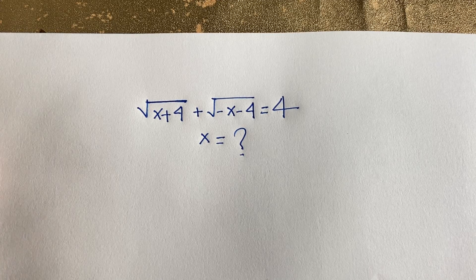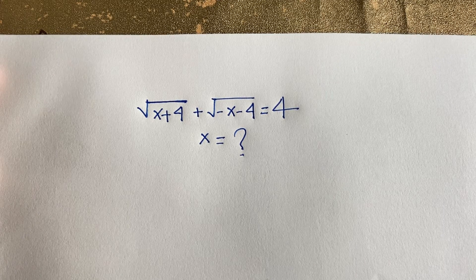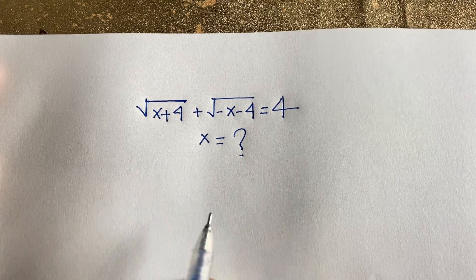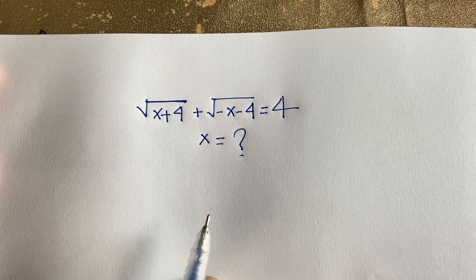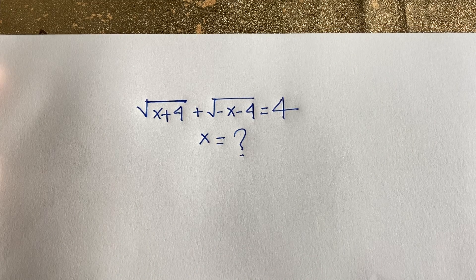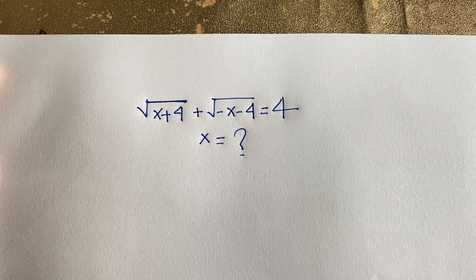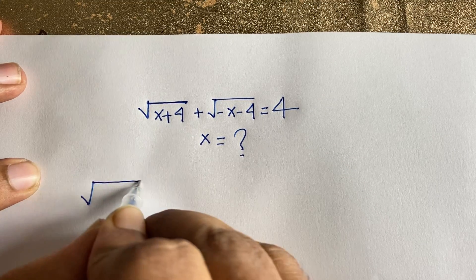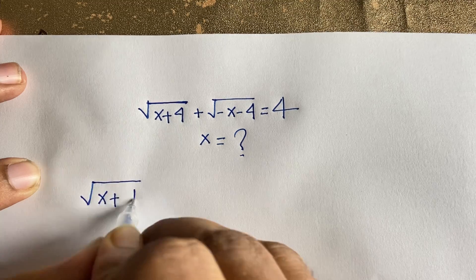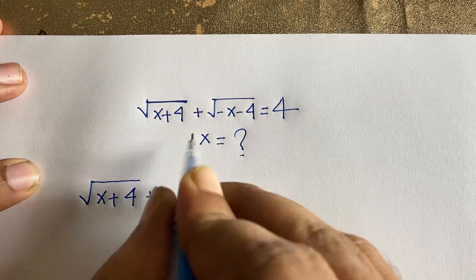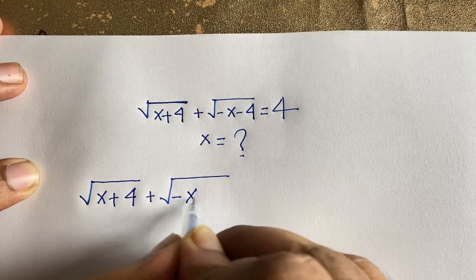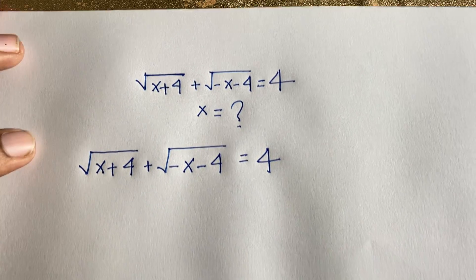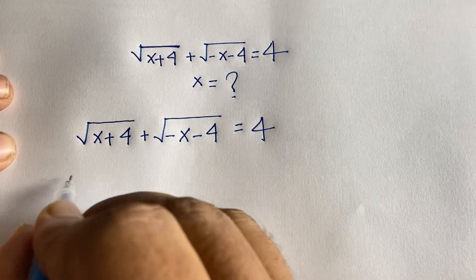Hello everyone. In this video we have solved this interesting math question. The question is: square root of (x+4) plus square root of (-x-4) is equal to 4. What is x? Let's start our solution.